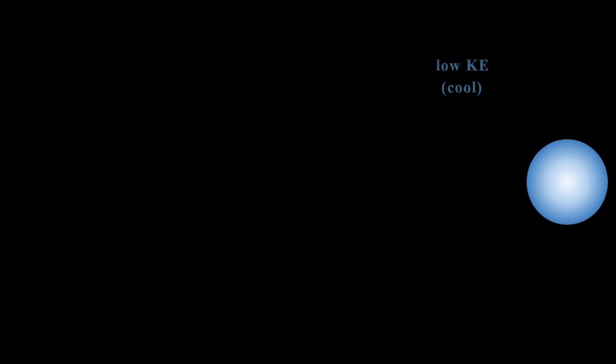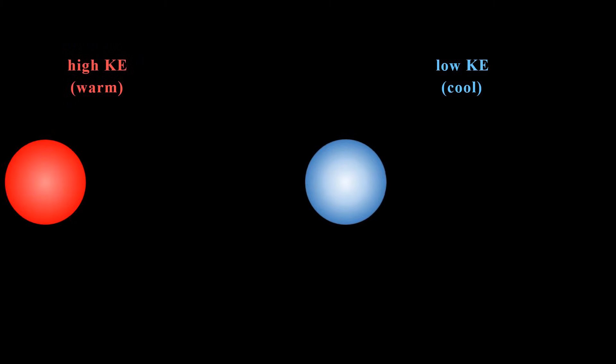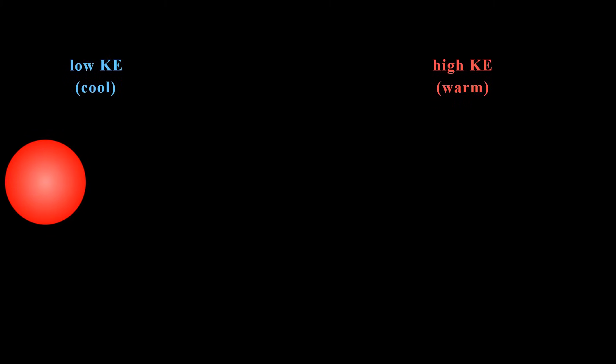What happens when a slow-moving particle hits a fast-moving particle? There's a transfer of kinetic energy. And how does that affect their temperature? Yes, the cooler particle becomes warm. The hot particle becomes cool.